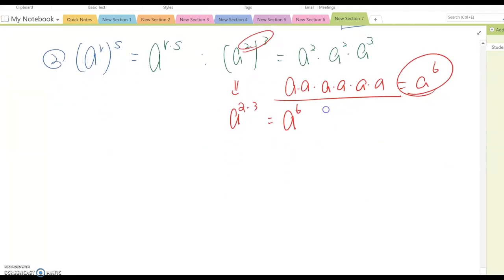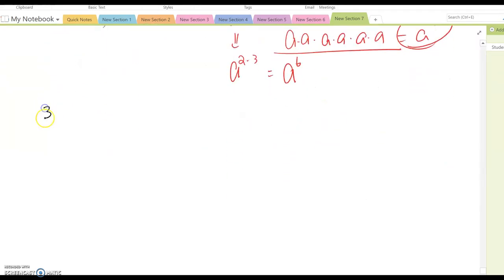Now, third one which is AB to the R power. What is this property? Yes, this will be A to the R, B to the R.